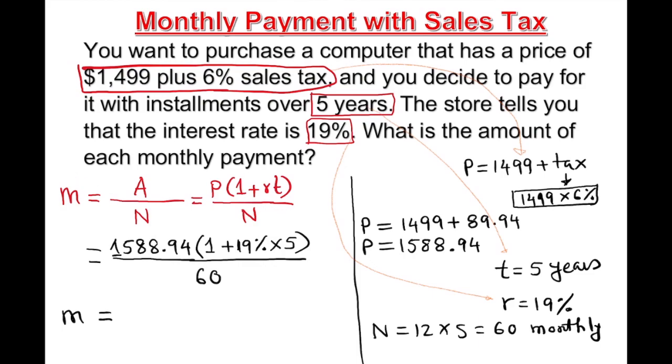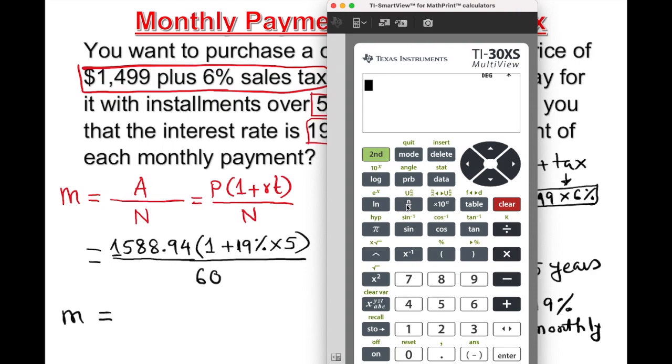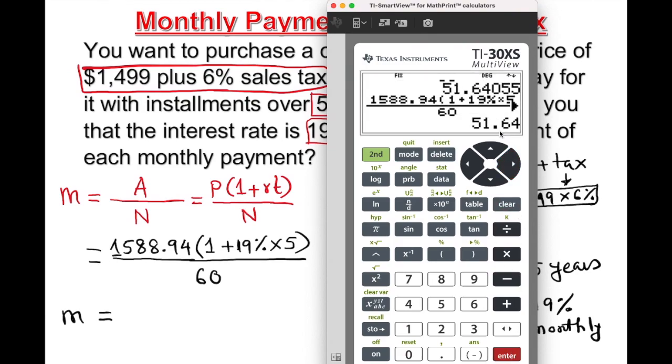Our M is going to be, let's use the calculator. Use the N over D button, that's very helpful. 1,588.94 open parenthesis 1 plus 19% times 5, close parenthesis, over 60, enter. $51.64.